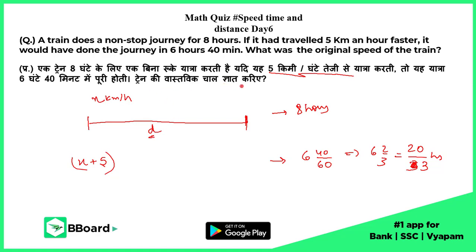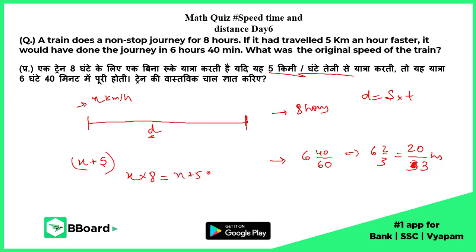We have to find out the value of x, the original speed of the train. Since the distance is the same in both conditions, I will use the equation: distance equals speed into time. First condition: speed was x and time was 8 hours. Second condition: speed was x plus 5 and time was 20 upon 3.